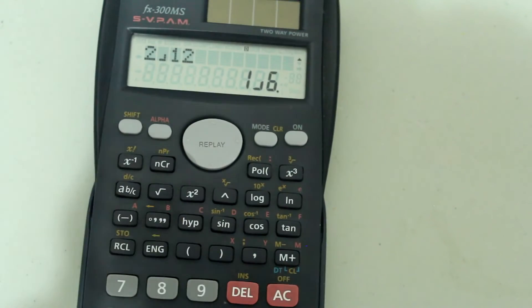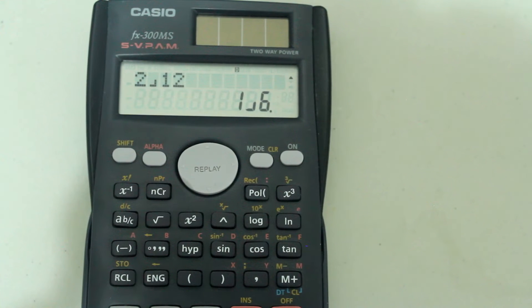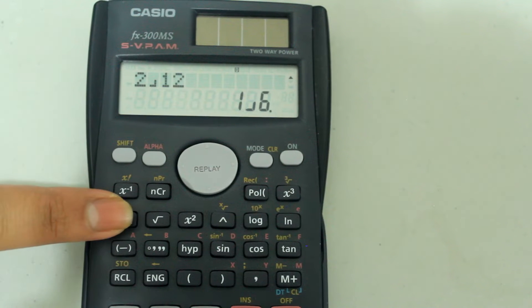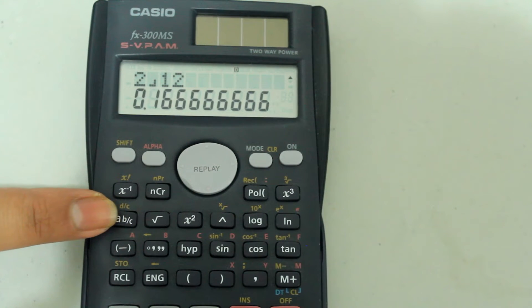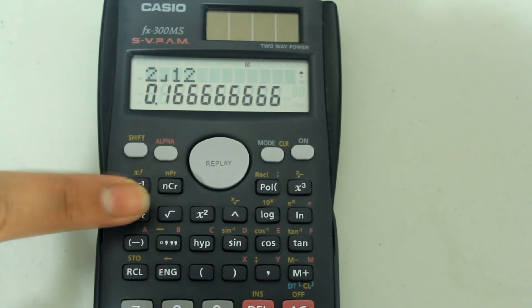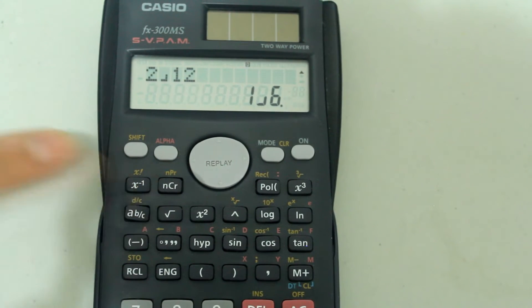and automatically it simplifies it down to the simplest fraction form. If I press the fraction button, it gives me the decimal, and I can go back to the fraction version by pressing the fraction one more time.